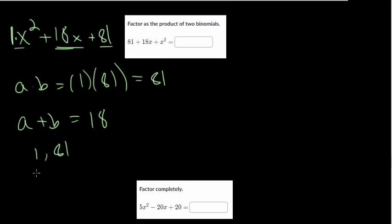You can do 3 and 27 or 9 and 9. And with those factor pairs written out, you can see that 9 and 9 is the only pair that would actually add up to 18. So A and B are both 9. And so let's use that grouping method.